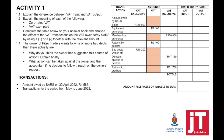Activity 1. This activity is going to focus on some theory questions and then calculations of VAT, determining whether we owe SARS or SARS owes us. If we look at the transactions, we start with the amount owed by SARS on 30 April 2022 and then transactions for the period from May to June 2022.